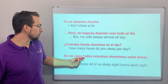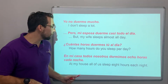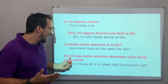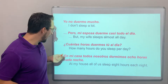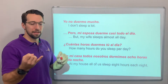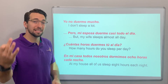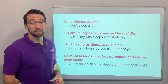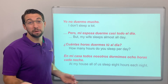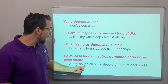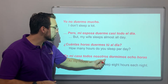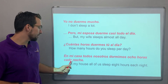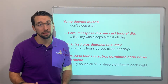En mi casa, todos nosotros dormimos ocho horas cada noche. At my house, all of us sleep — todos nosotros dormimos — eight hours, ocho horas, cada noche, each night. Or todas las noches, either way. Note that 'en' is a preposition meaning in, on, or at — how you translate it often comes down to style or preference.